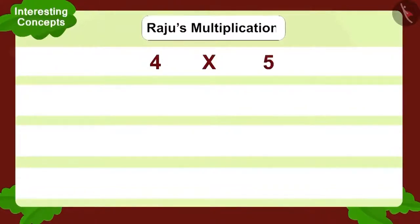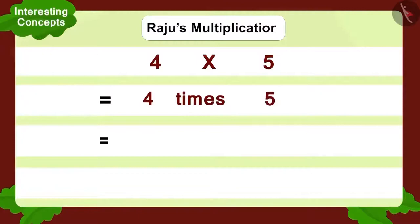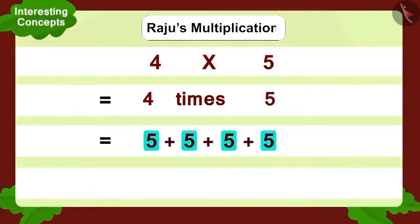Can you write this in another way? Four times five. Now, how will we write it in addition form? By adding five, four times like this. So what is the total number of balls? Twenty.